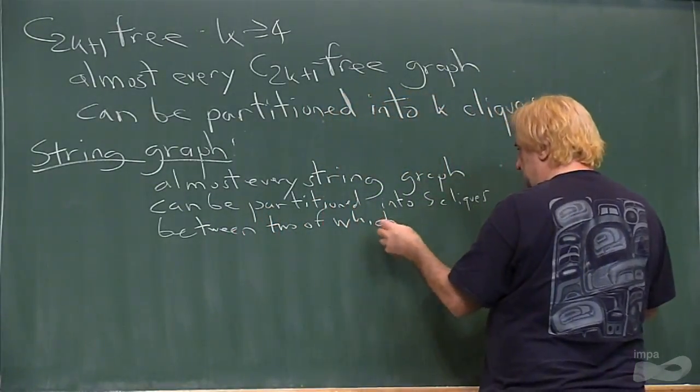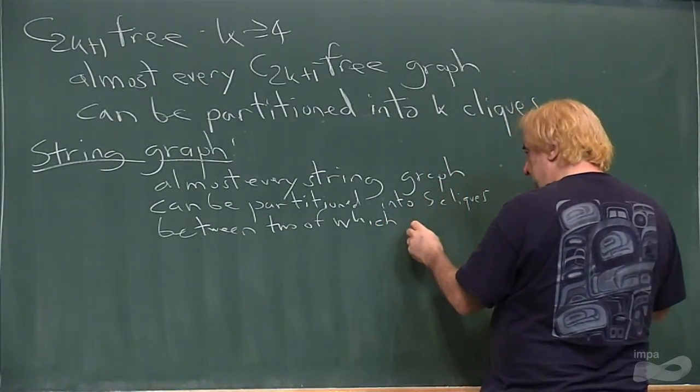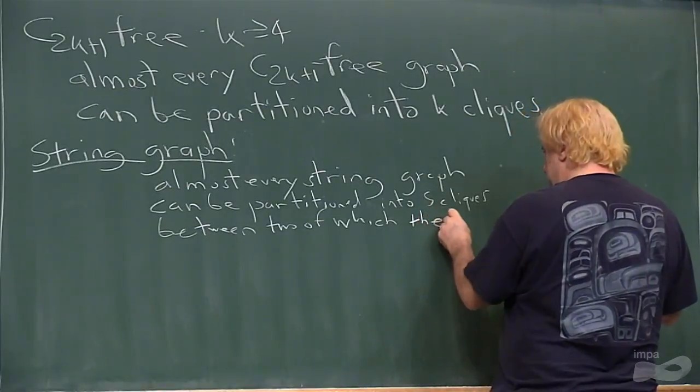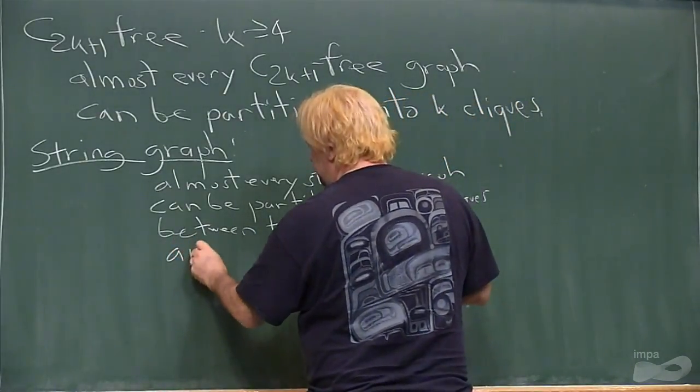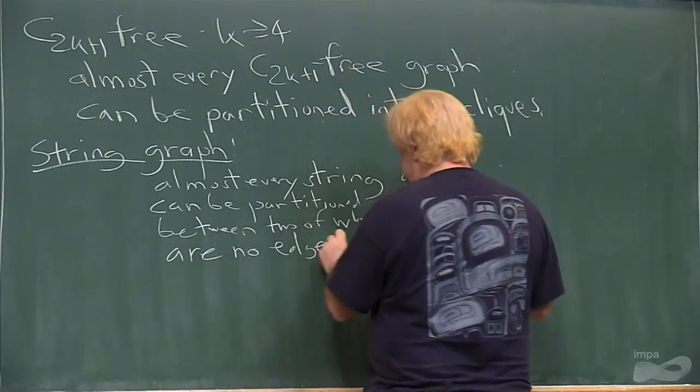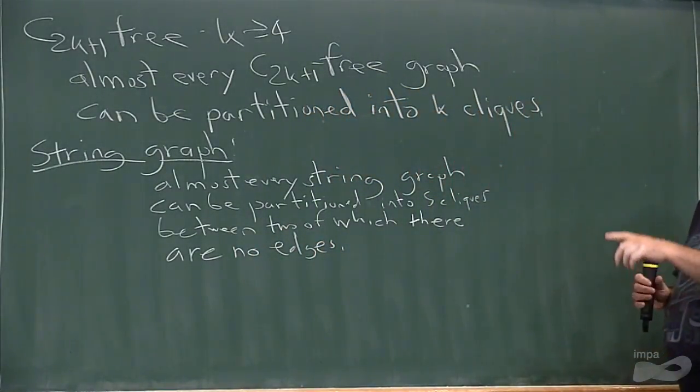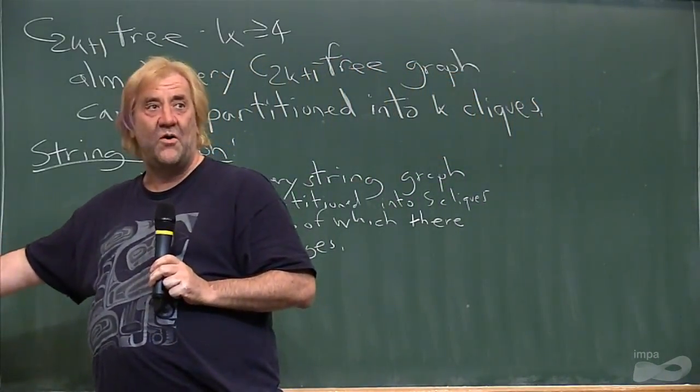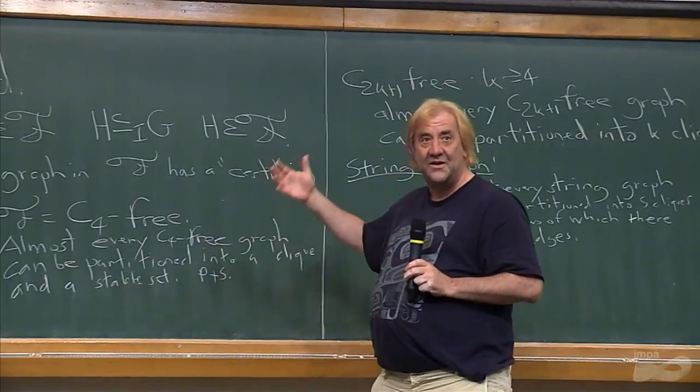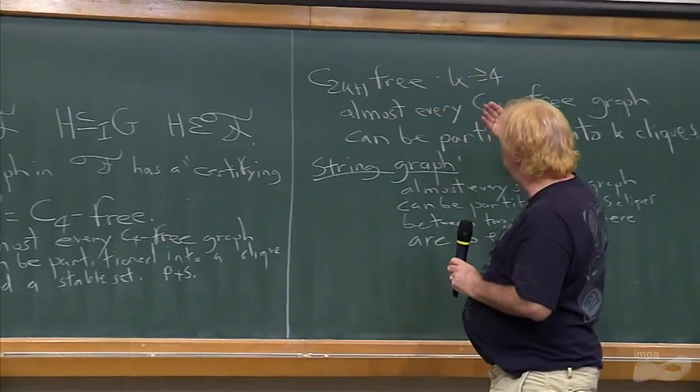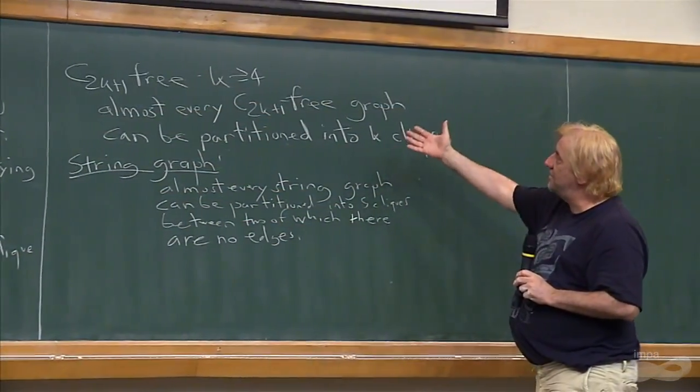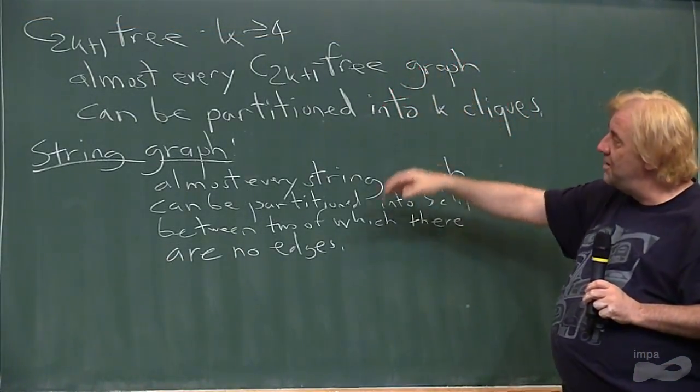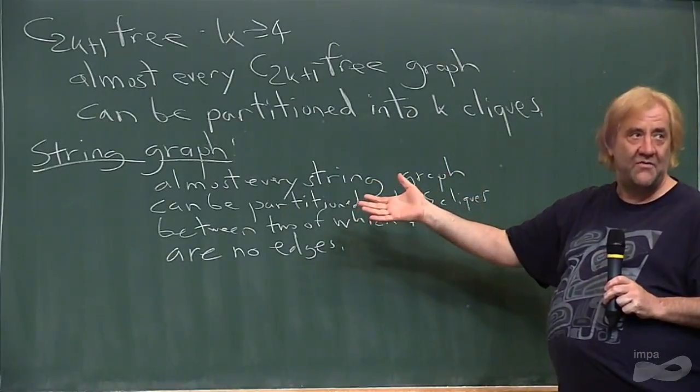The result that Janusz and Lenny, Lenny Yuditsky and I did last year here. These are certifying partitions because you can't partition a C4 into a clique and a stable set, so any graph that has this partition is C4 free. You can't partition a C_{2K+1} into K cliques, so any graph that has this partition is C_{2K+1} free.